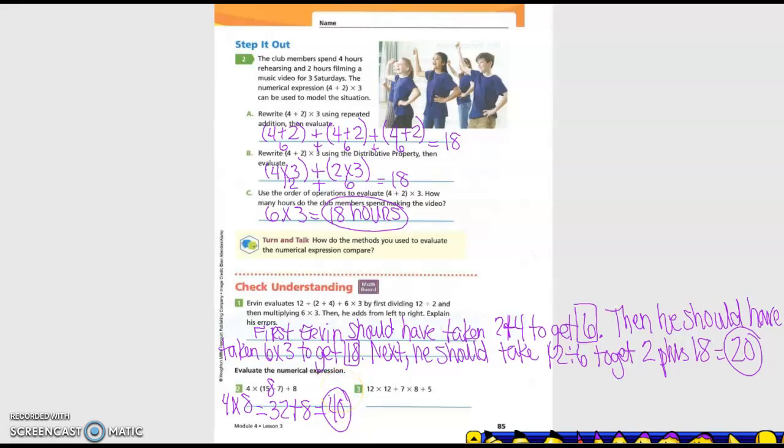Okay. The next one. 12 times 12 plus 7 times 8 plus 5. Now there is no parentheses, but can you add them so you know what to do first? Yes. Okay. So what are we going to do first? We have to do all of the multiplications first, right? Okay. So let's go ahead and put 12 times 12 in parentheses and 7 times 8. So 12 times 12 is 144 plus 7 times 8 is 56, and then plus that 5, right? So what is 144 plus 56? 200, and then 200 plus 5 equals 205.